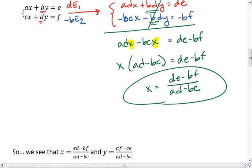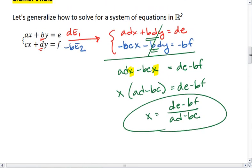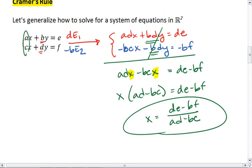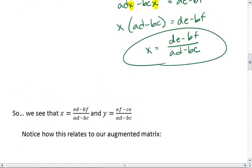We could go through a similar process for y. If you want to, you're more than welcome to do that on your own. And we would do that just by making the x coefficients the same. What we end up with is that x equals DE minus BF all over AD minus BC, and y equals AF minus CE all over AD minus BC.